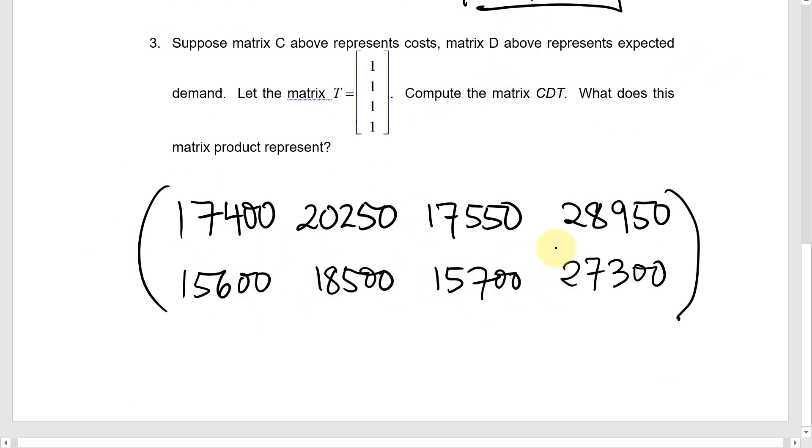So this is the 2 by 4 matrix that we just got, that we used in questions 1 and 2. Now, question 3 is, if we multiply this by a column of ones, what would we get? What would it mean?